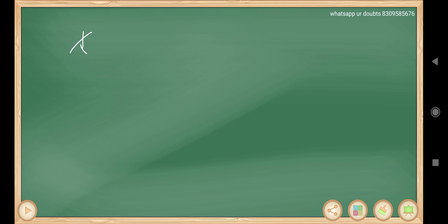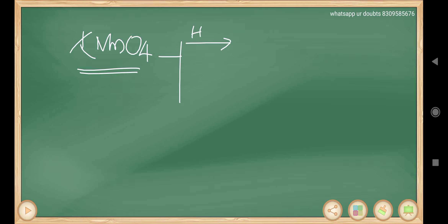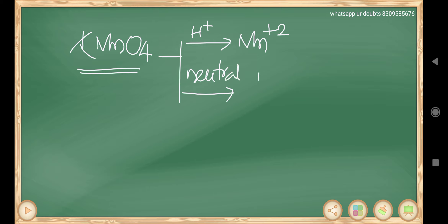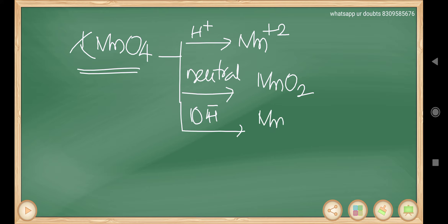The most common example is potassium permanganate, KMnO4. In acidic medium, it changes to Mn²⁺. In neutral or weakly basic medium, it changes to MnO₂. In basic medium, it changes to MnO₄²⁻.